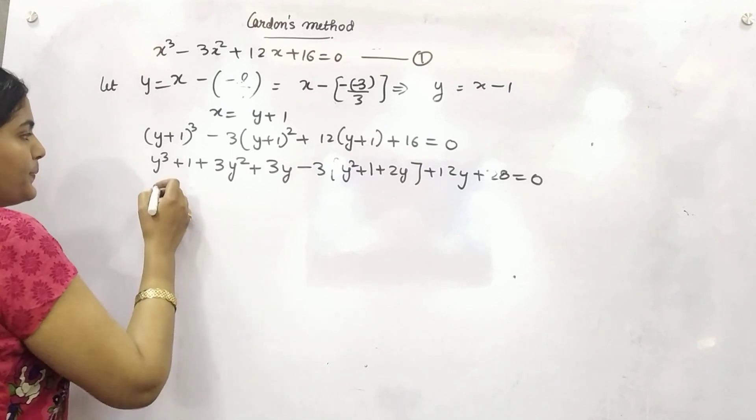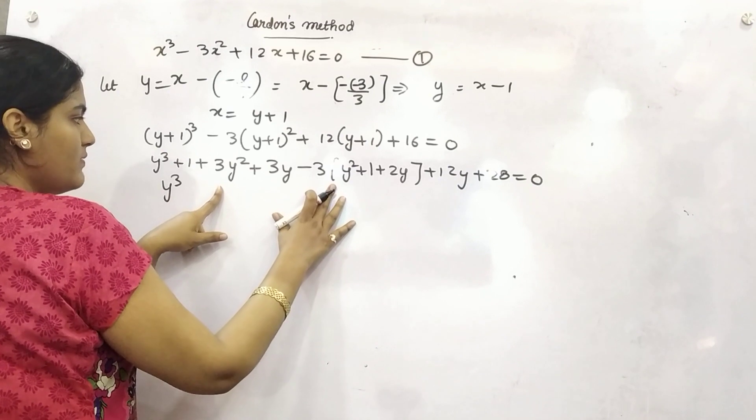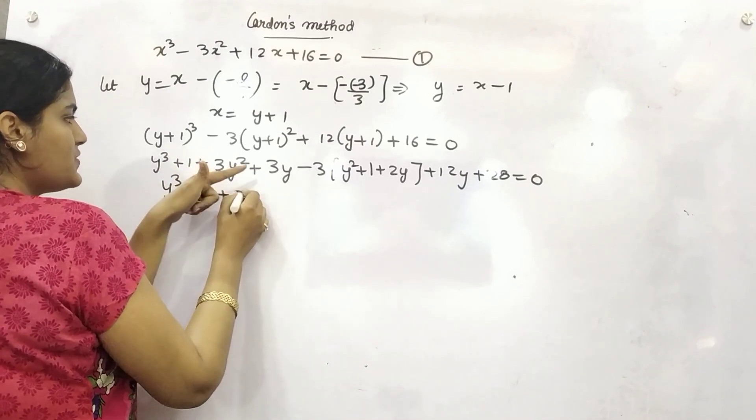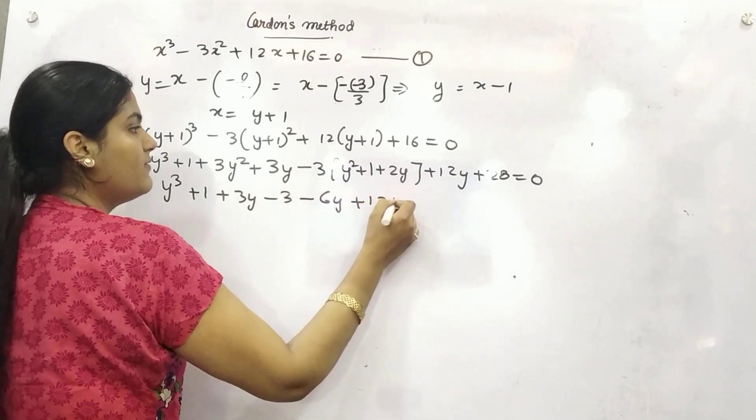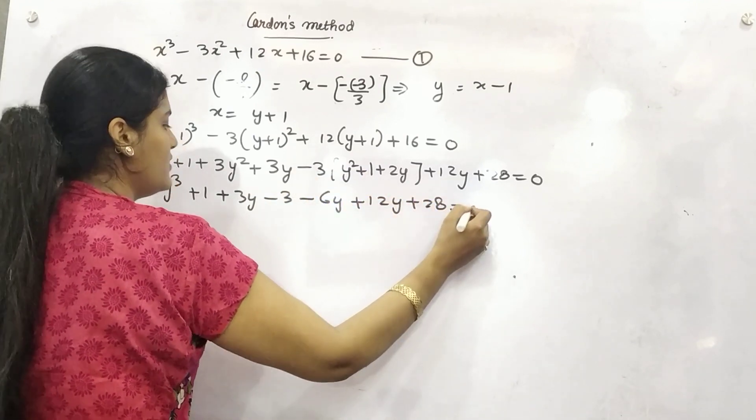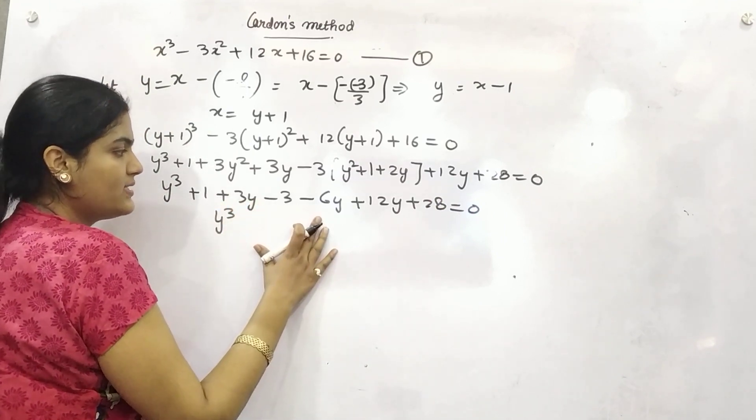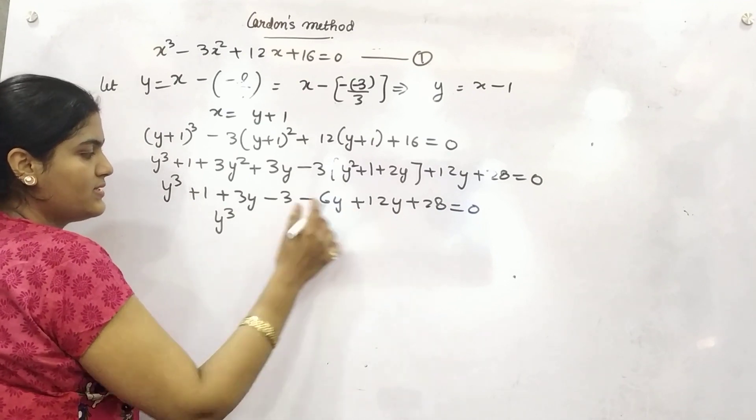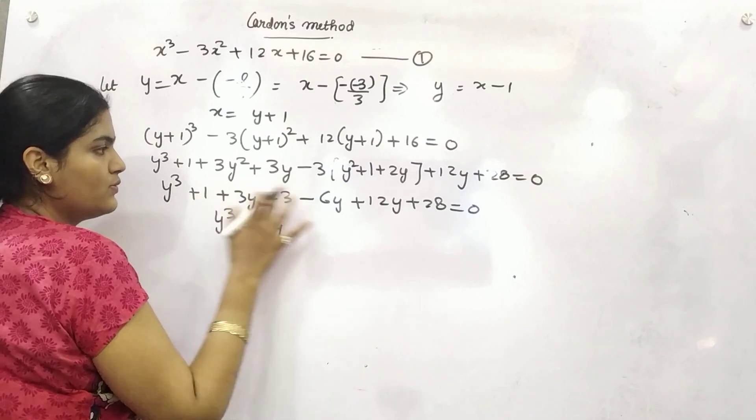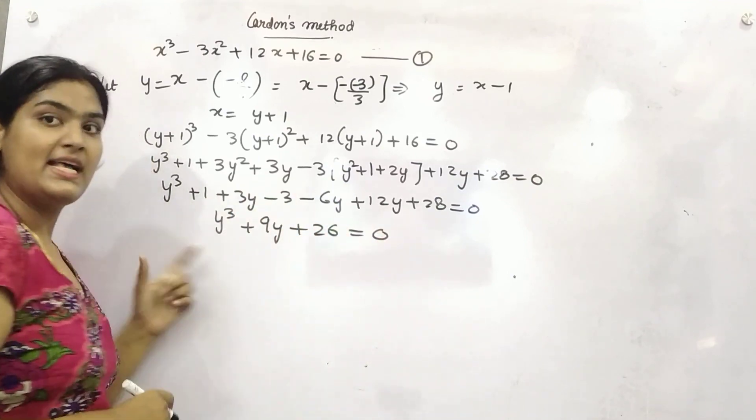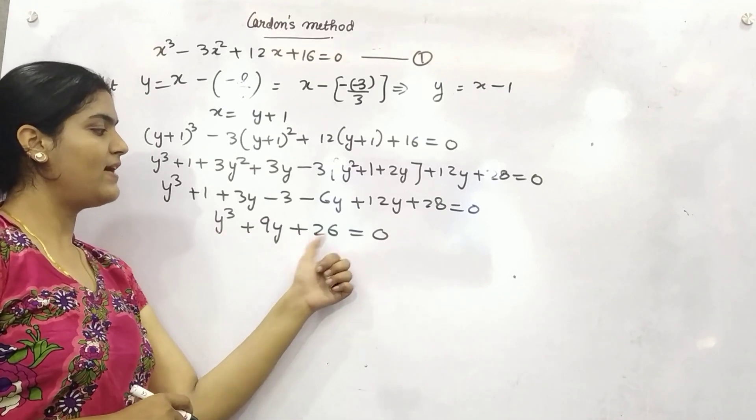Then after what will you get after solving it? So 3y square will be cancelled by 3y square. This is 1 plus 3y minus 3 minus 3 minus 6y plus 12y plus 28 equals 0. So after simplifying it, 3 minus 6 is minus 3. 12 minus 3 is 9, 9y right? And this is minus 2. This is minus 6. As I told you, this will be in the form of y cube plus py plus q.